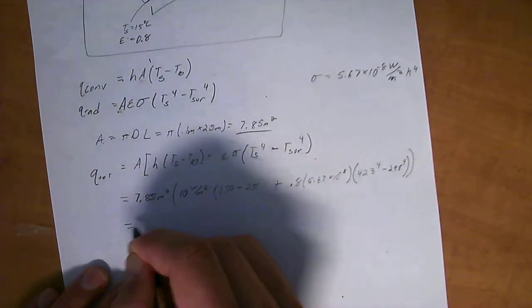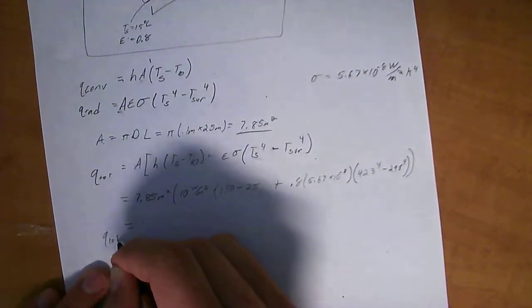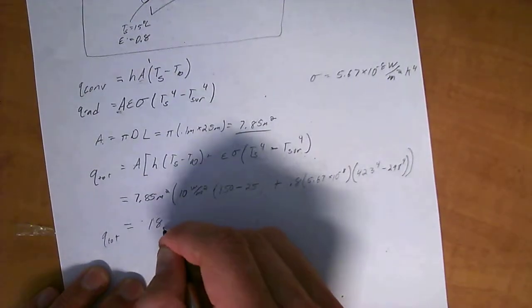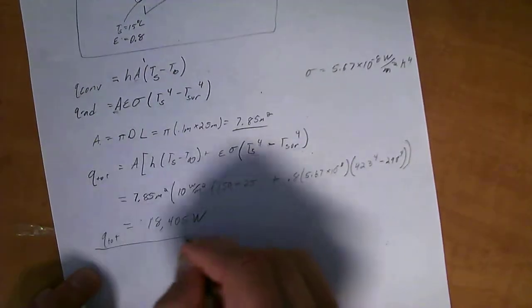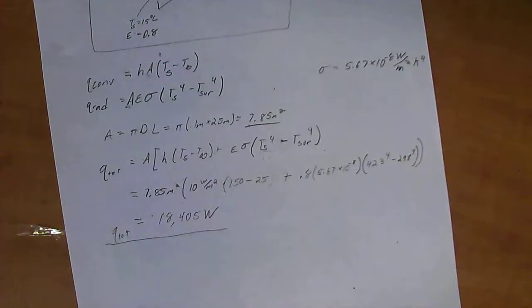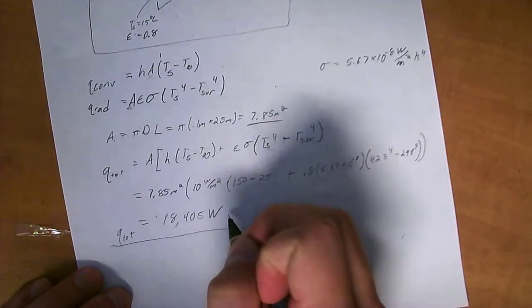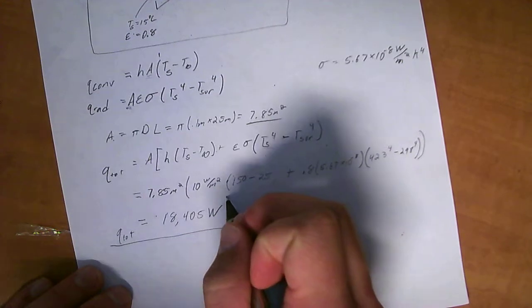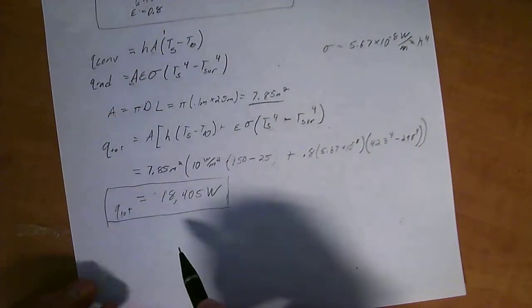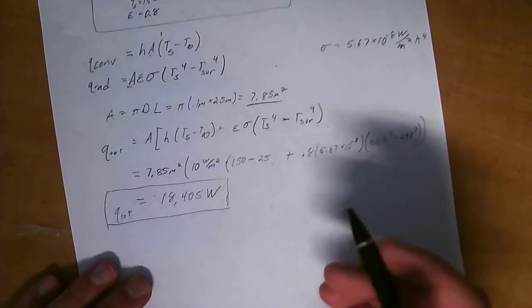And then if you just go ahead and plug and check and put this all through your calculator again, you'll find out that Q total is equal to 18,405 watts. So that's how much heat is moving out of this 25 meters of pipe, right there.